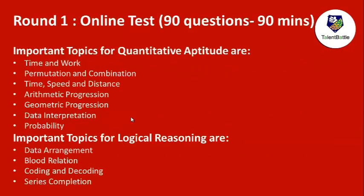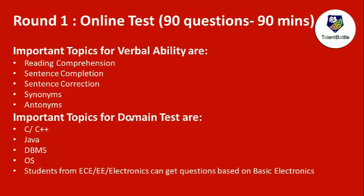Here are some important topics for Quantitative Aptitude: Time & Work, Permutation & Combination, and Speed, Distance & Time. You can take a screenshot of this screen. For Logical Reasoning: Coding-Decoding, Data Arrangements, Sentence Series Completion, and Blood Relations. Important Verbal Ability topics and Domain Test topics are also shown — students from Electronics or Communication backgrounds will get questions on their own domain and basic electronics.